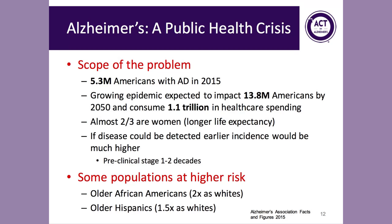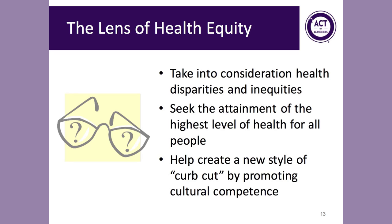If the disease could be detected earlier, the incidence would be much higher. There's a preclinical stage of the disease where pathology exists in the brain but there are no active symptoms, and that lasts for 10 to 20 years. Some populations are at higher risk, including older African Americans, who are twice as likely as whites to develop the disease, and older Hispanics, who are 1.5 times as likely as whites, largely due to health disparities. This is why it's important to look at all we're doing through a lens of health equity. Health equity refers to the attainment of the highest level of health for all people, and it's important that we create tools and resources for all people living with dementia, promoting cultural competence across all individuals who are older and may be living with cognitive impairment.